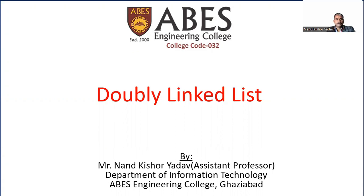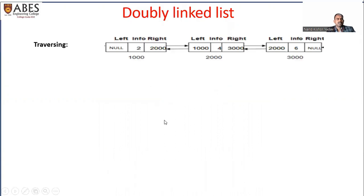In this lecture series on doubly linked list, today we are going to discuss an algorithm for traversing a doubly linked list. Traversing means visiting each node at least once — we print the info part of the start node, then the second node, up to the last node. In some applications we need forward traversal as well as backward traversal, so we will write an algorithm for both.